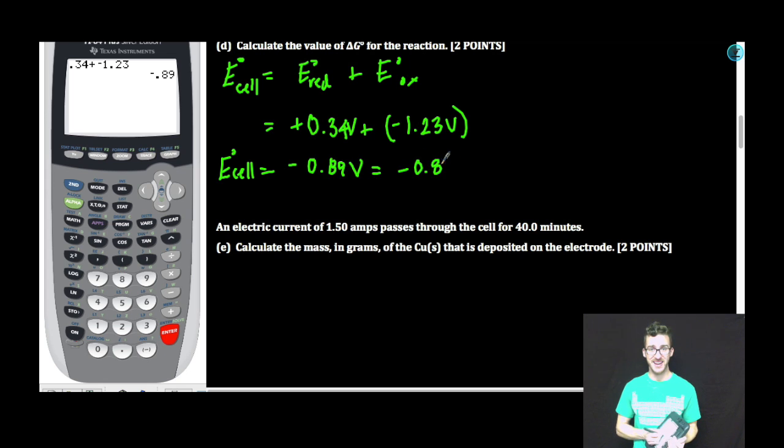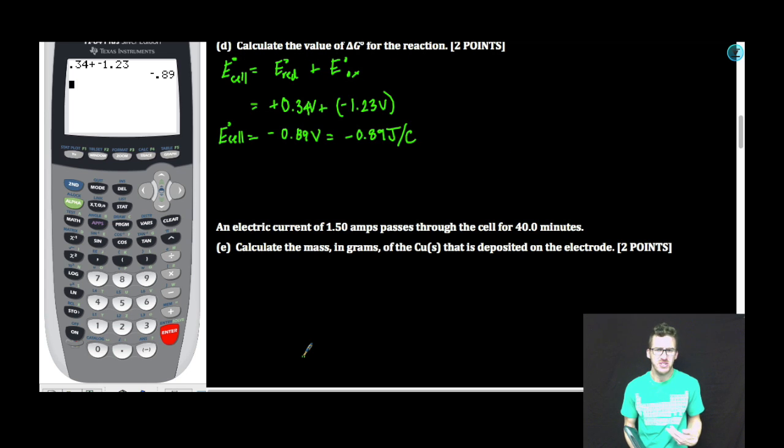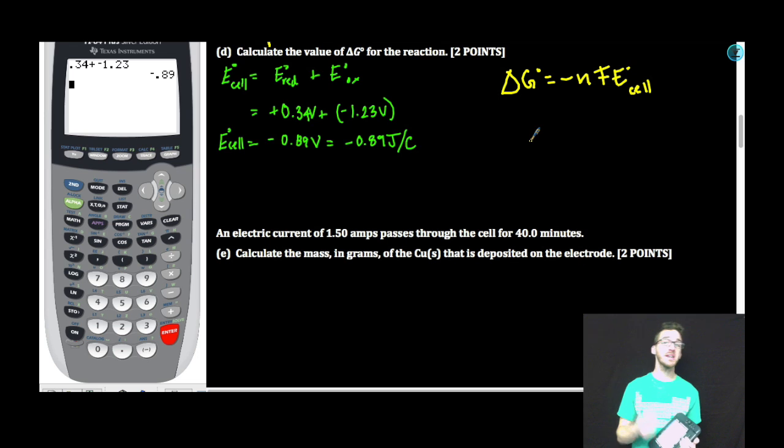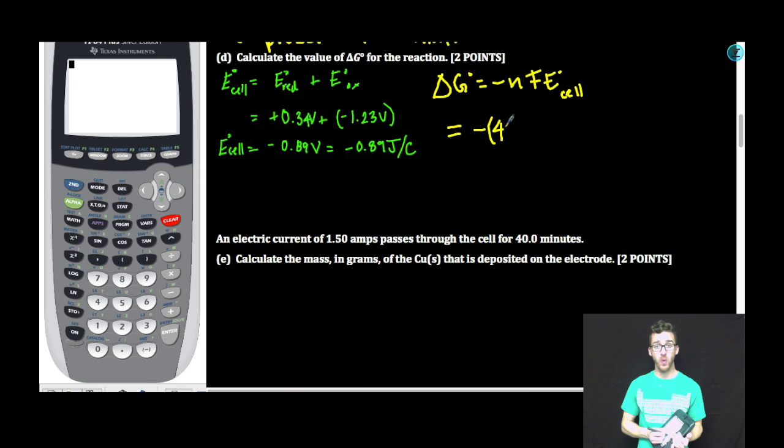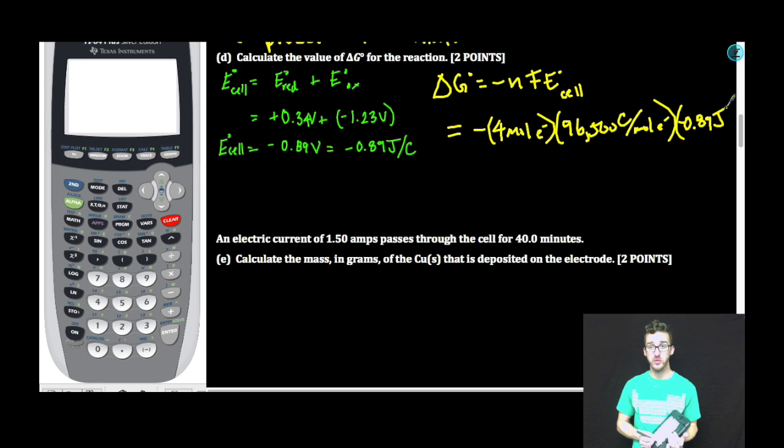So my cell potential is negative 0.89 volts, also known as negative 0.89 joules per coulomb. Again, before you move forward, ask yourself, does it make sense that I have a negative cell potential for an electrolytic cell? Answer yes. All right, now that we have a cell potential, let's just plug it into this equation. Trickiest part about this, and I think where students make the most error, is determining number of moles of electrons transferred. So let's scroll back up. Take a look at our part B.